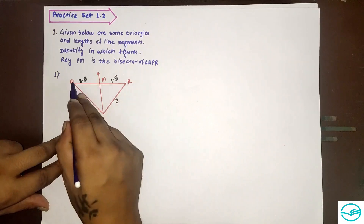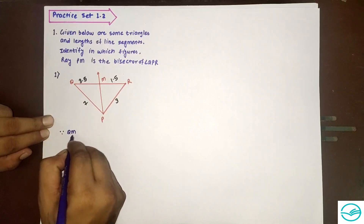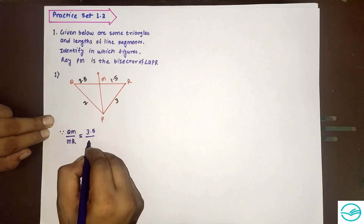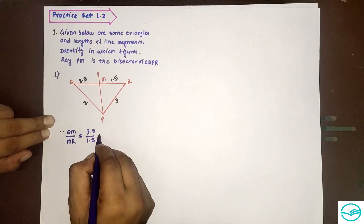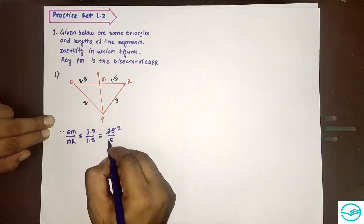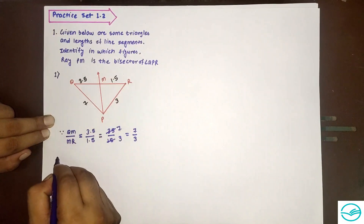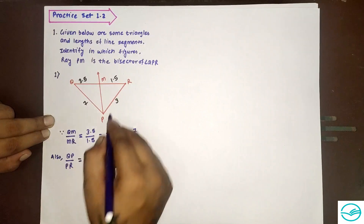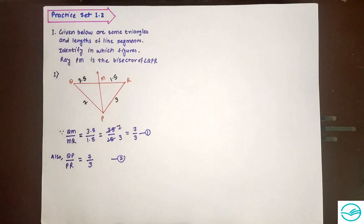First, let's check QM divided by MR. Since QM is 3.5 and MR is 1.5, both have one decimal place, so we get 35 divided by 15, which simplifies to 7 divided by 3. This is equation 1. Now for QP divided by PR: QP is 7 and PR is 3, giving 7 by 3. This is equation 2.